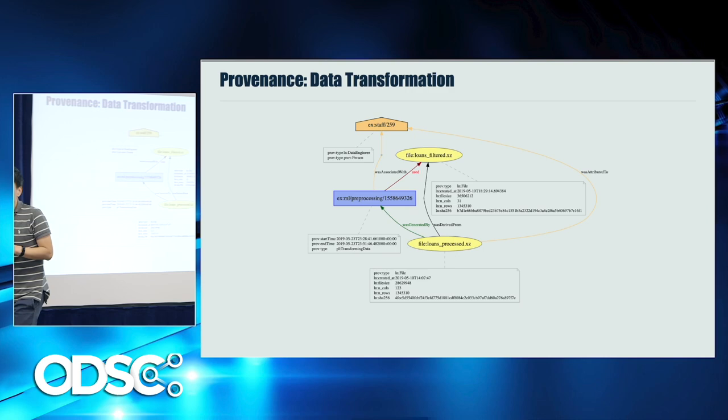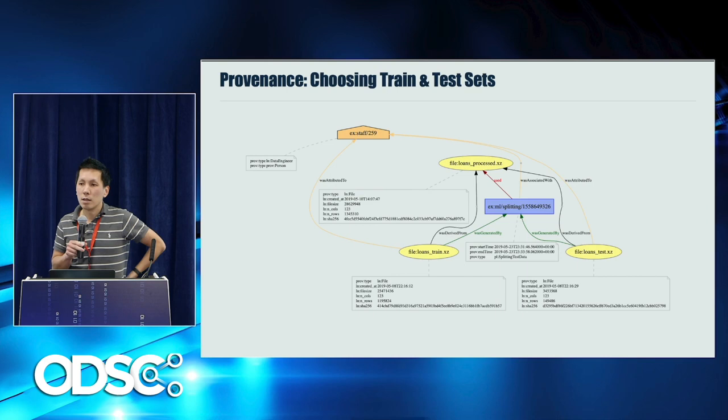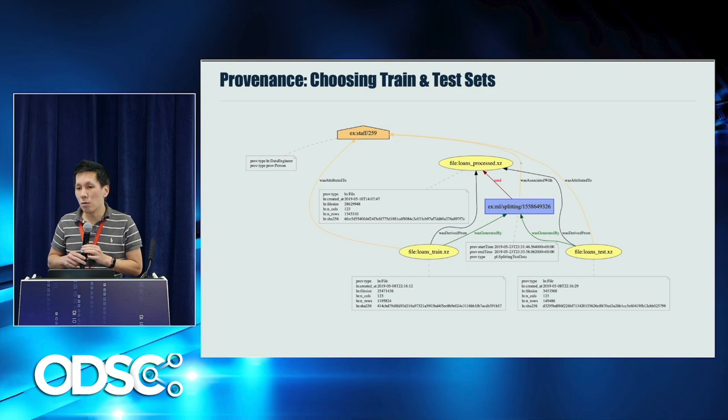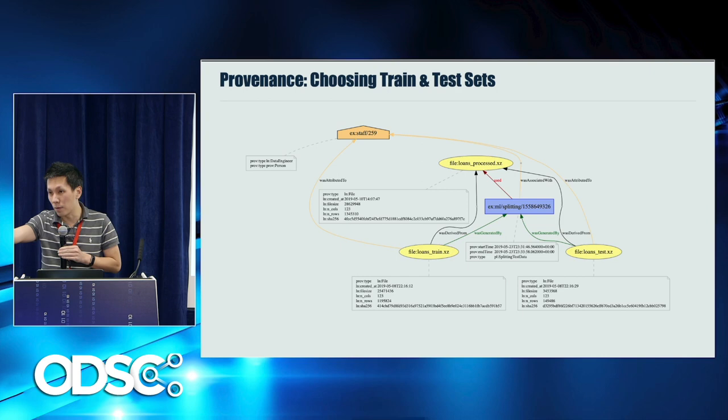Question from audience: Would you go even deeper and describe how individual columns are processed? Response: Yes, you could. The pictures you have in front of you represent a set of words — concepts and relations — a vocabulary that you use. You could start with just a high-level description, then progressively add more detail depending on what questions you want to answer from the provenance.